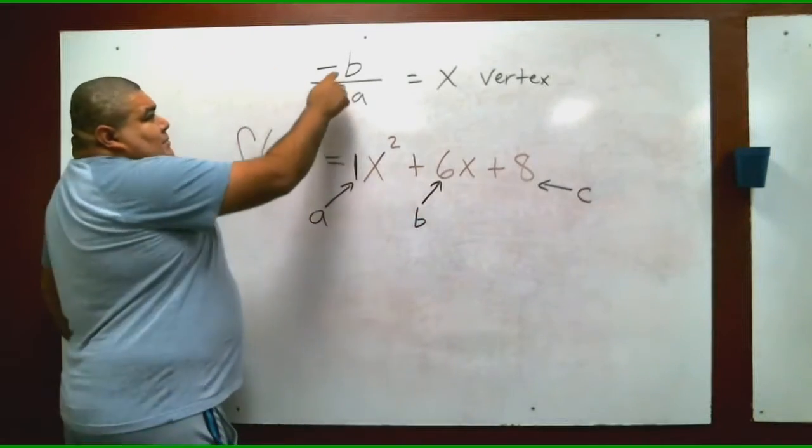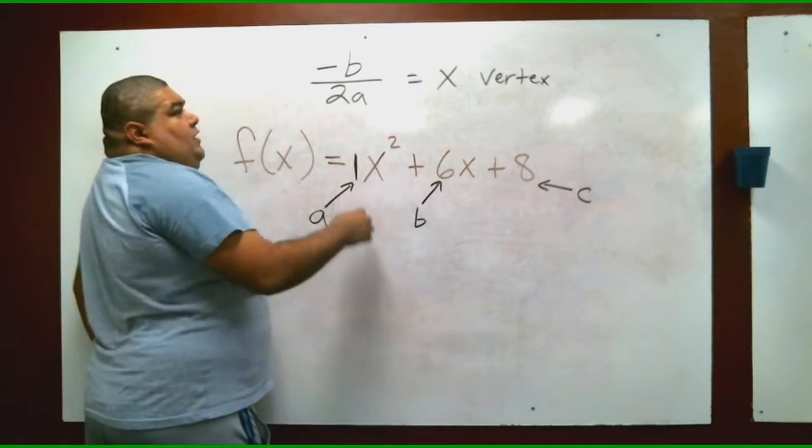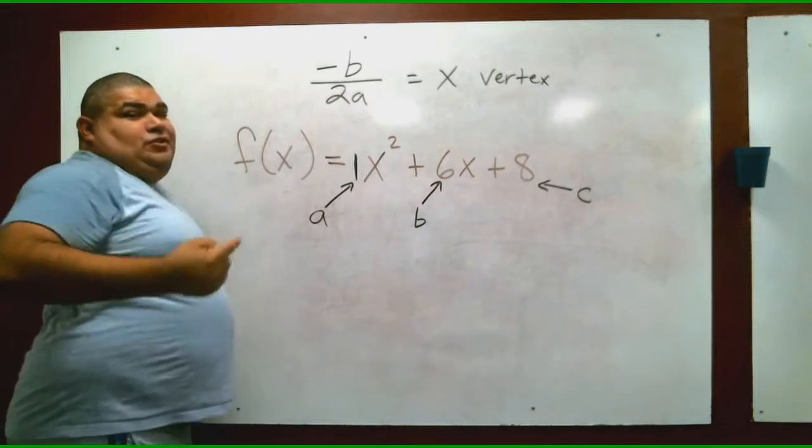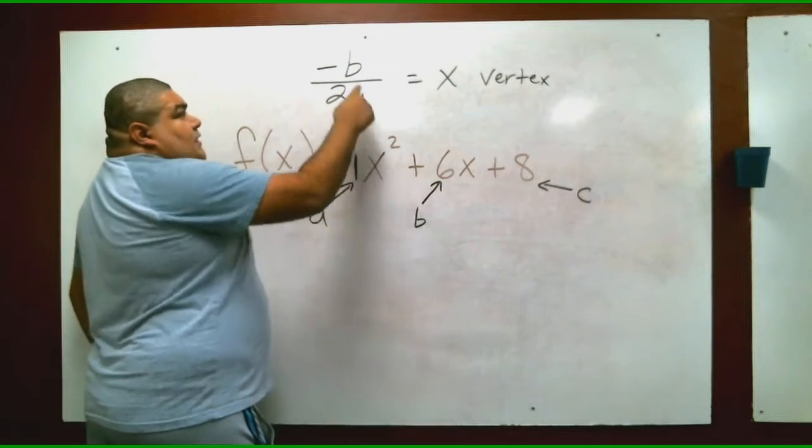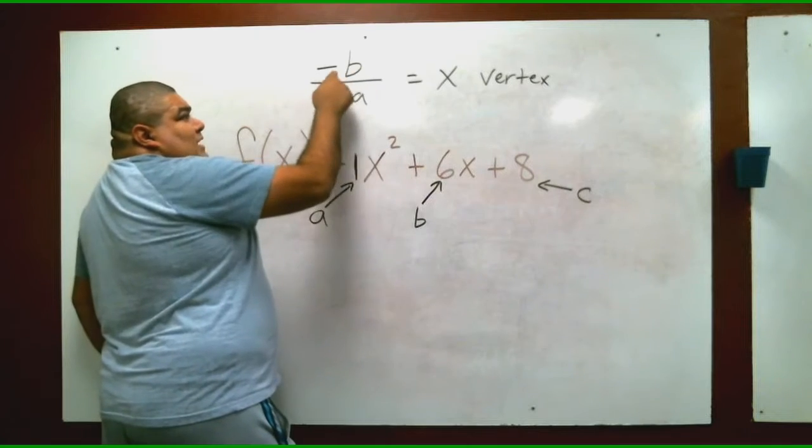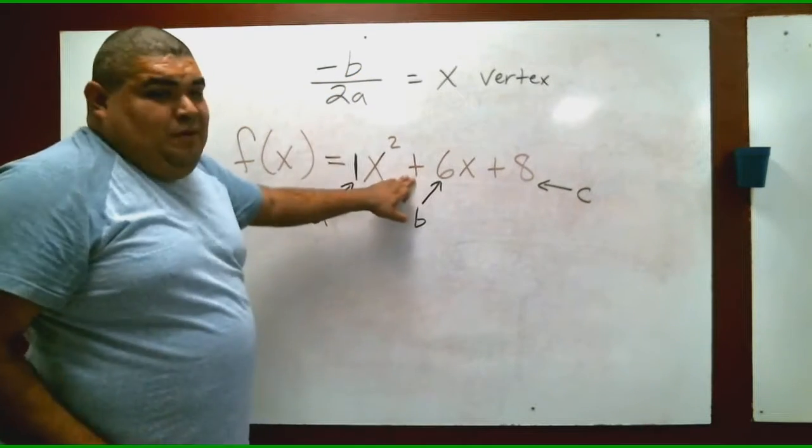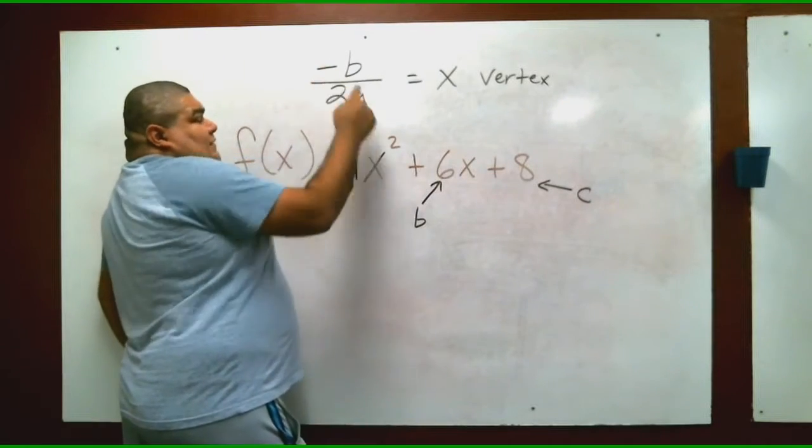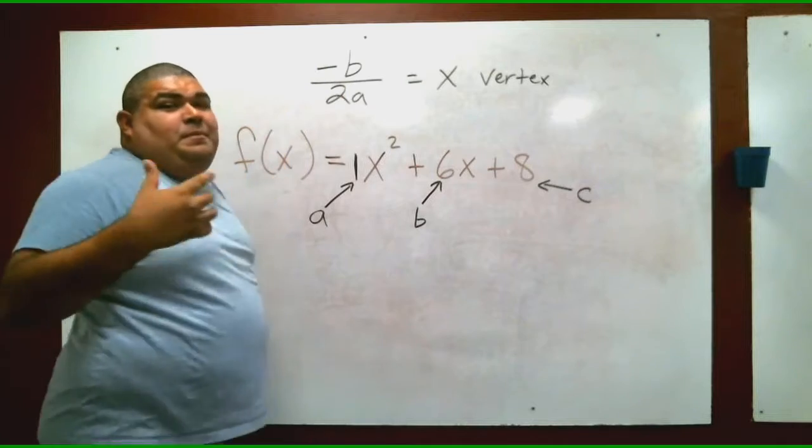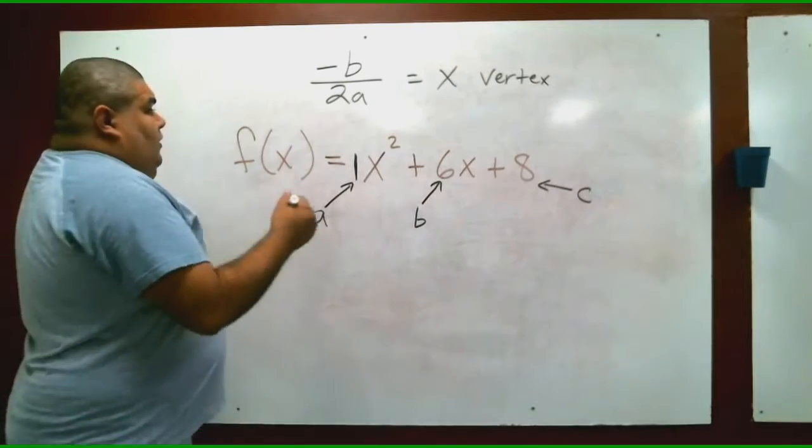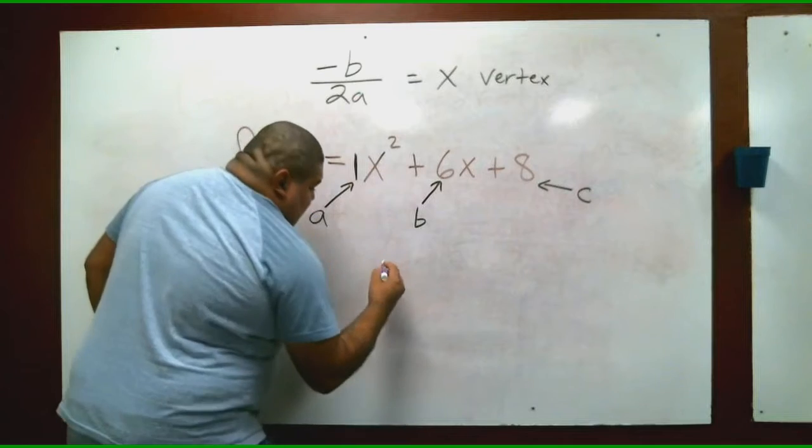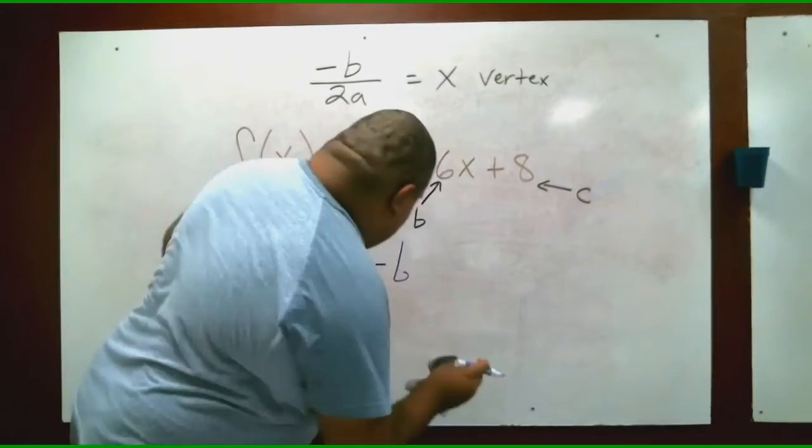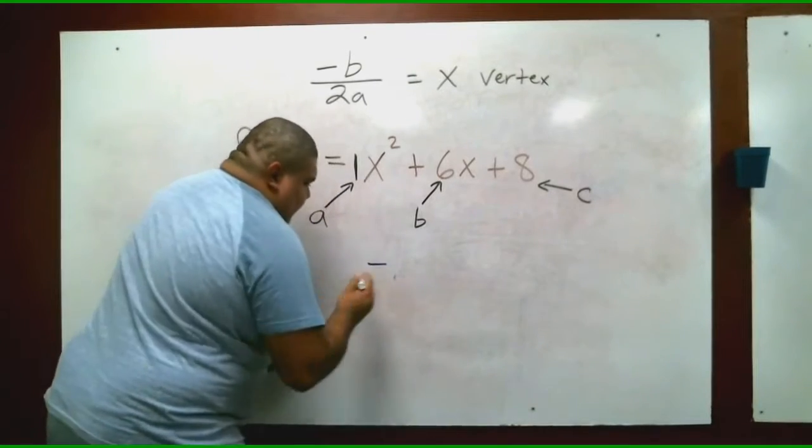We can plug in b because we know what b is, it's 6, right? Notice that there's a negative from the front of the equation. If it's positive here, then your new problem for b is -6, because it's positive here. Positive times negative is negative. If this would have been a negative, negative times negative would have been positive. Since it's positive, we have -6 over 2a.